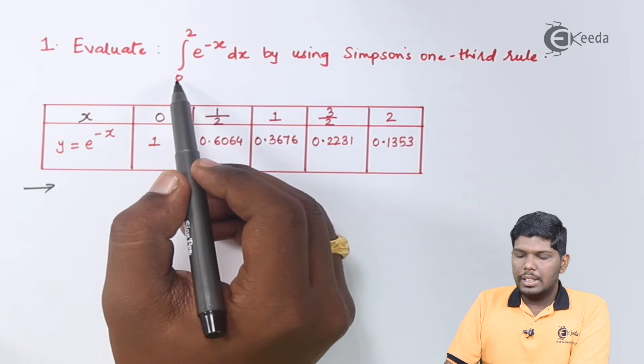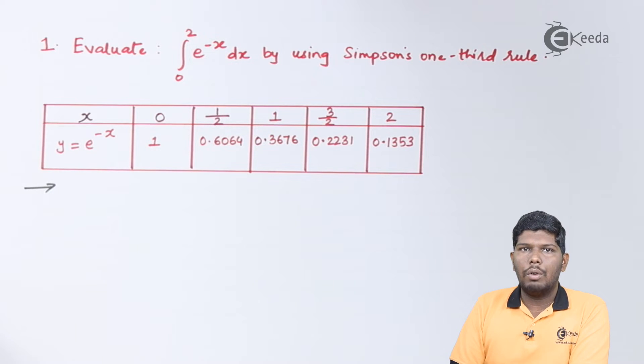So the first step that we can do is write lower limit, upper limit, and try to find the value of h.